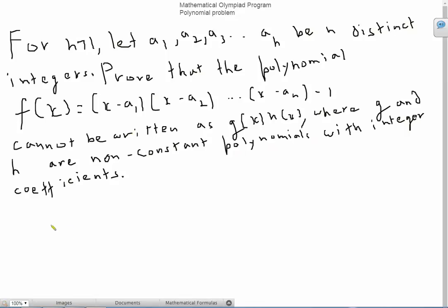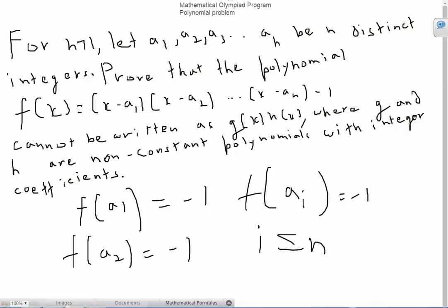Okay, so first off, you have to note that when we put f(a1), we get minus 1. Similarly, when we put f(a2), we're also going to get minus 1. In general, for f(ai), we get minus 1 for i less than or equal to n. Now the proof can actually start to take off.